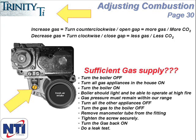Once you've confirmed this is the case, turn off all the other appliances, turn off the gas to the boiler, remove your manometer tube, then make sure you securely tighten the screw on the line pressure port. Once that is done, do a leak test to make sure everything is properly sealed.